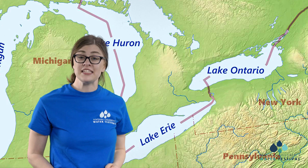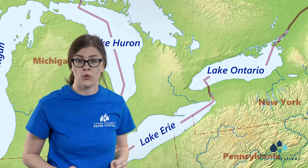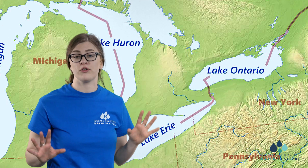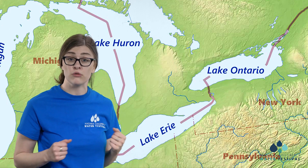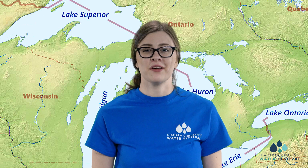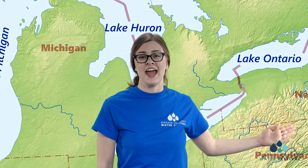Last but not least is Lake Huron right here. This lake is one of the most important as it has the longest shoreline, which means it has the most wetlands of all the Great Lakes. This is really important because this is where baby fish live and grow. Now let's look at the Niagara River — Niagara Falls is actually located on the Niagara River in between Lake Erie and Lake Ontario, right here on the map.